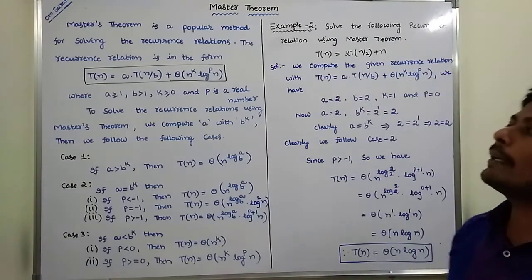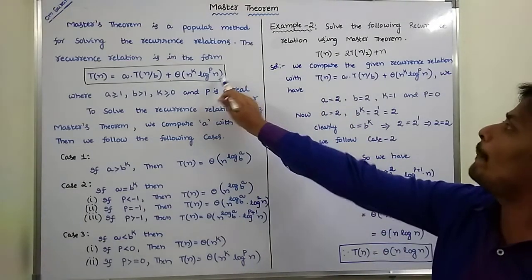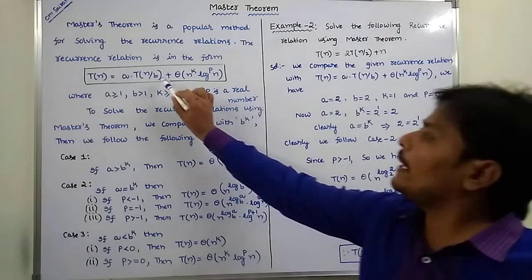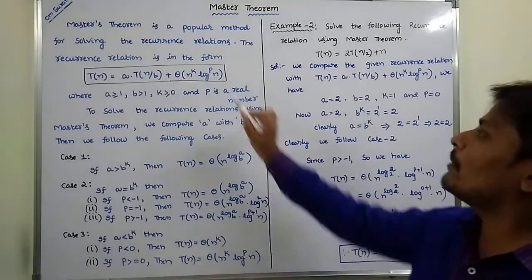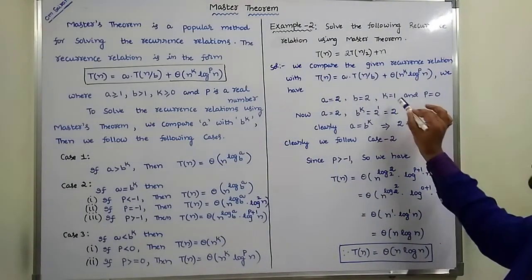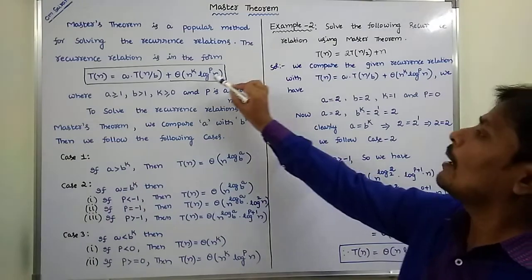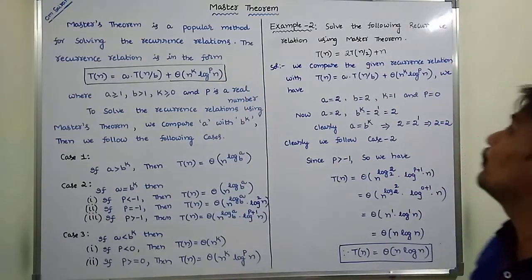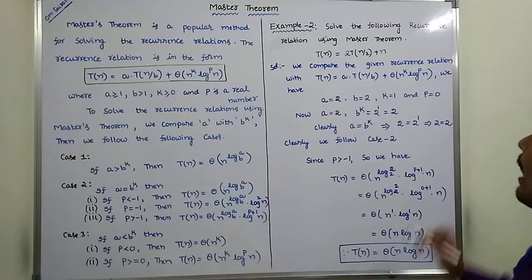We compare the given recurrence relation with the standard recurrence relation. After comparing, the A value is 2 and the B value is 2. For theta(n^k * log^p(n)), here n is present but log^p(n) term is not there, so k value is 1 and since the log^p(n) term is absent, p can be taken as 0.